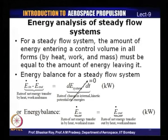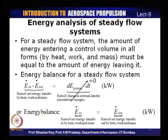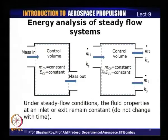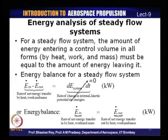Let us now derive the energy equation for a steady flow process. For a steady flow system, the amount of energy entering a control volume — in all its forms: energy transfer by heat, by work, or by virtue of mass flow — should equal the energy leaving the control volume. The energy of a control volume, whether single entry or multi-entry, is constant. So the total energy entering in all its forms (heat, work, or mass) must equal the total energy leaving the system.